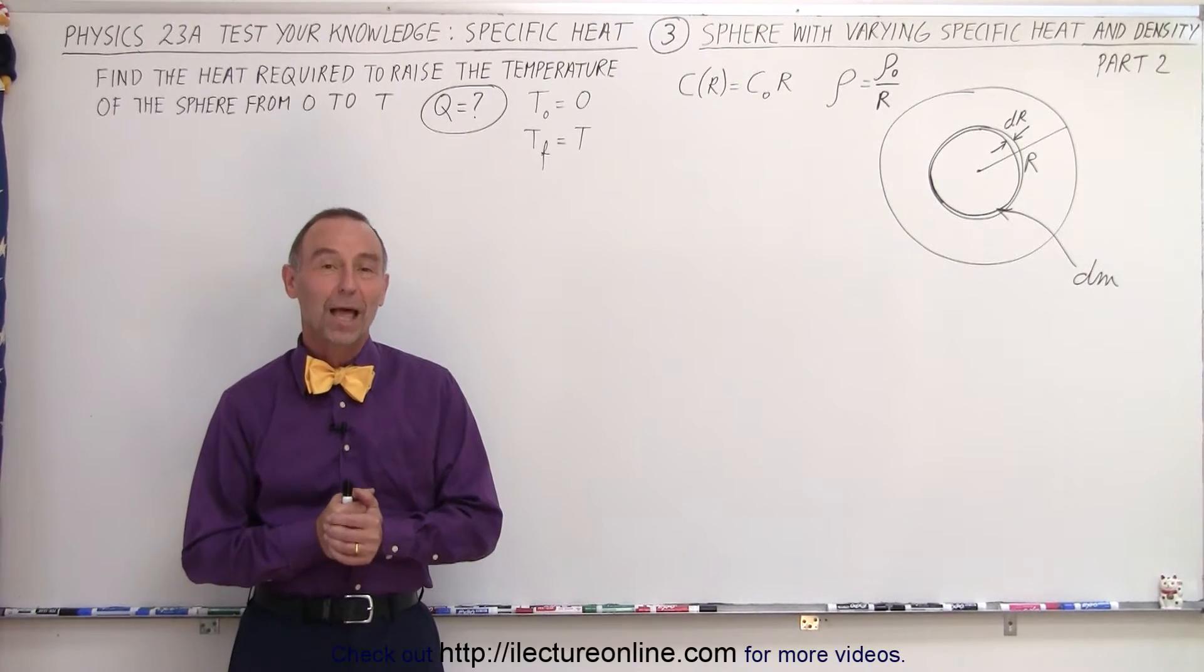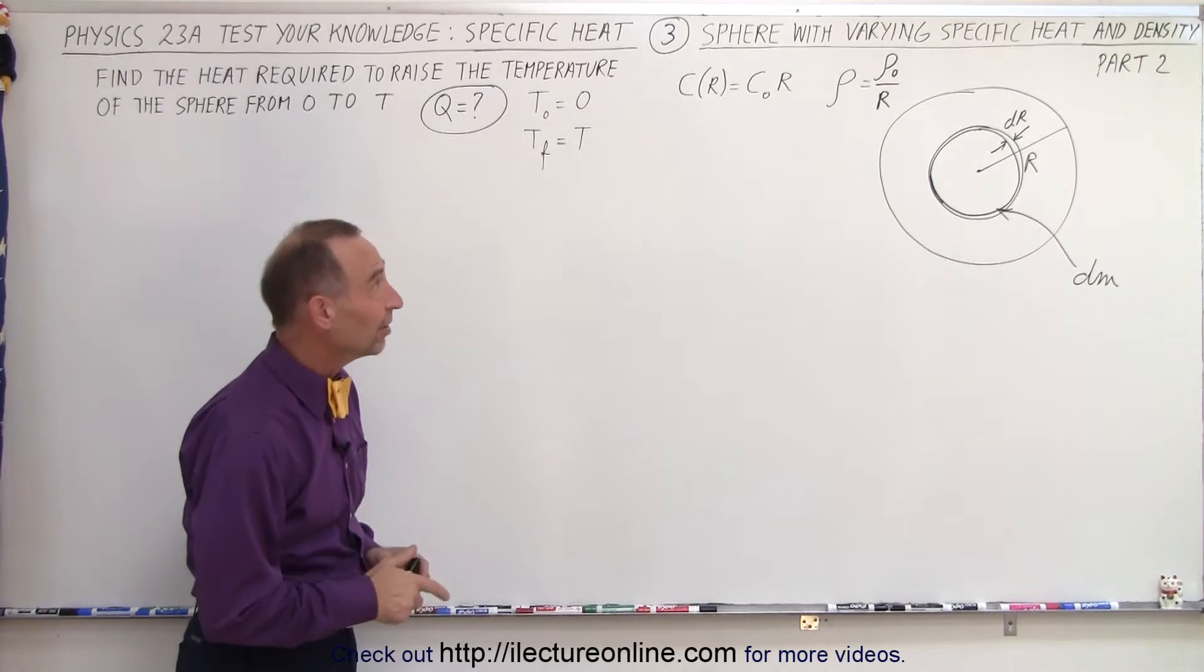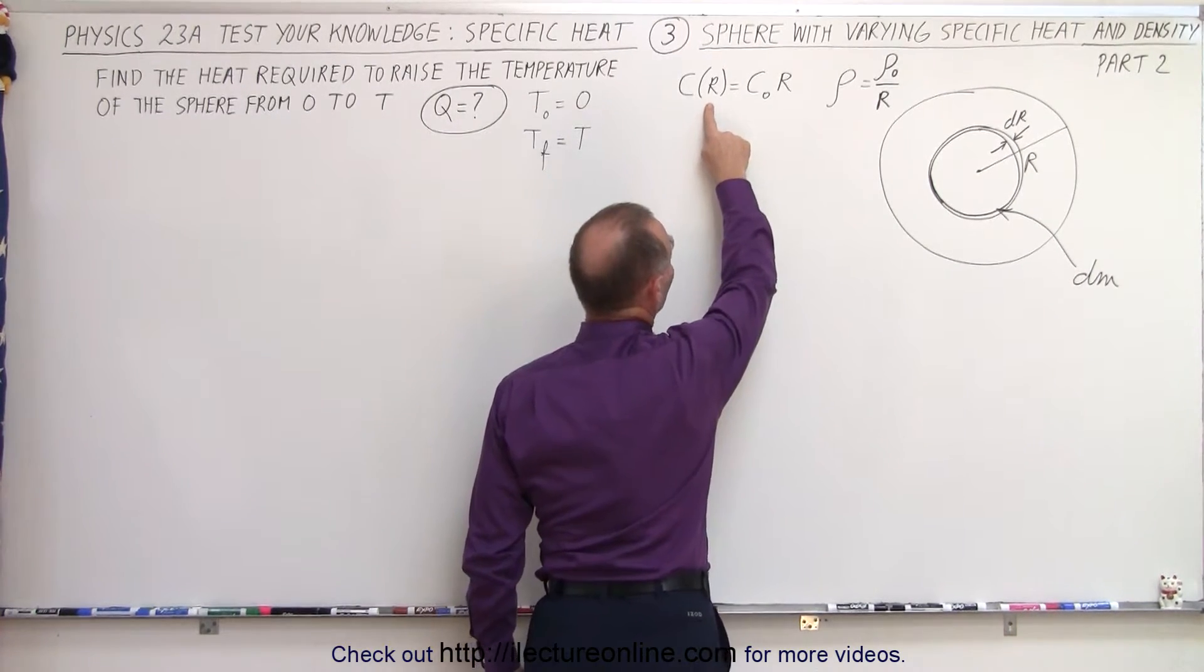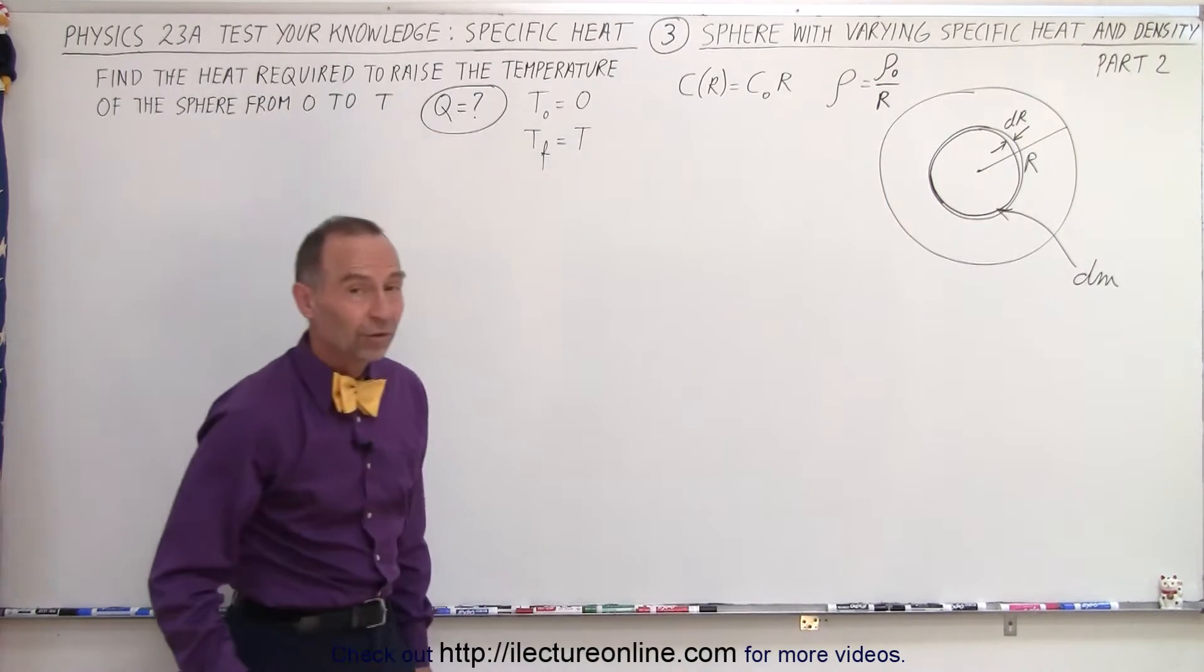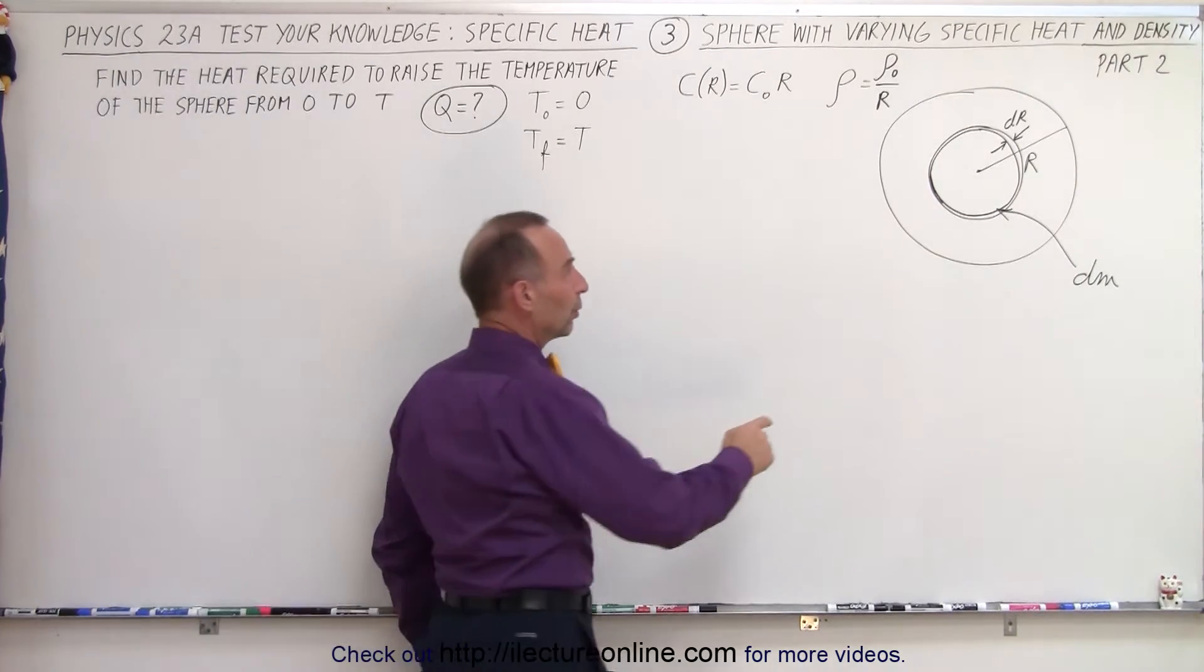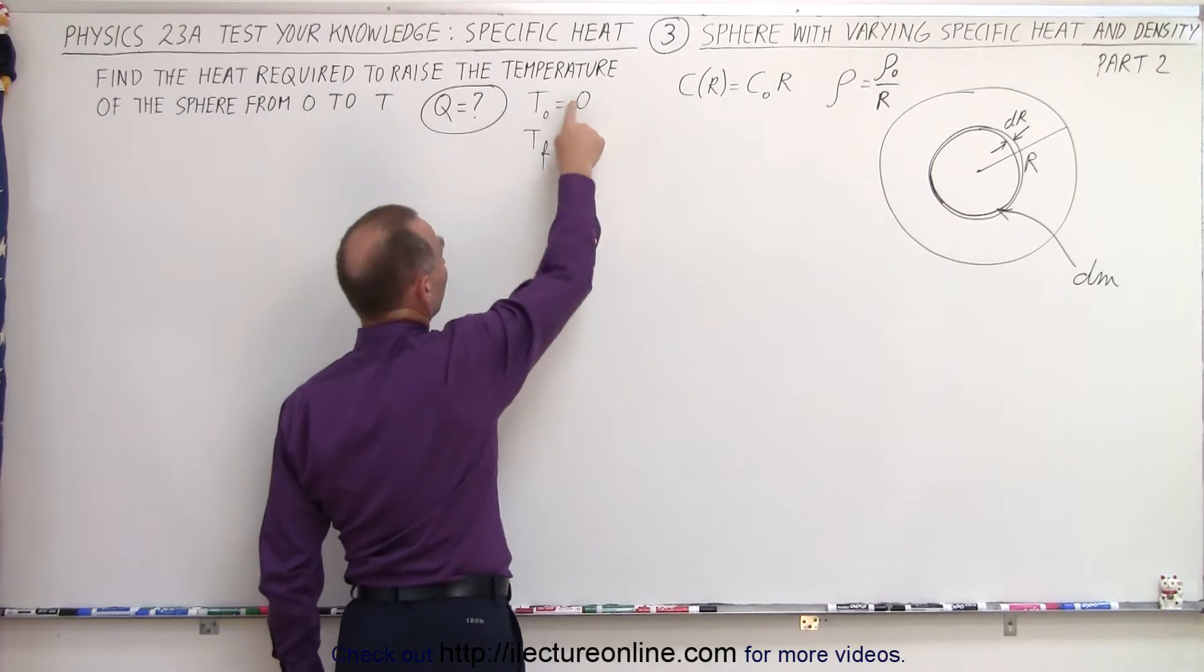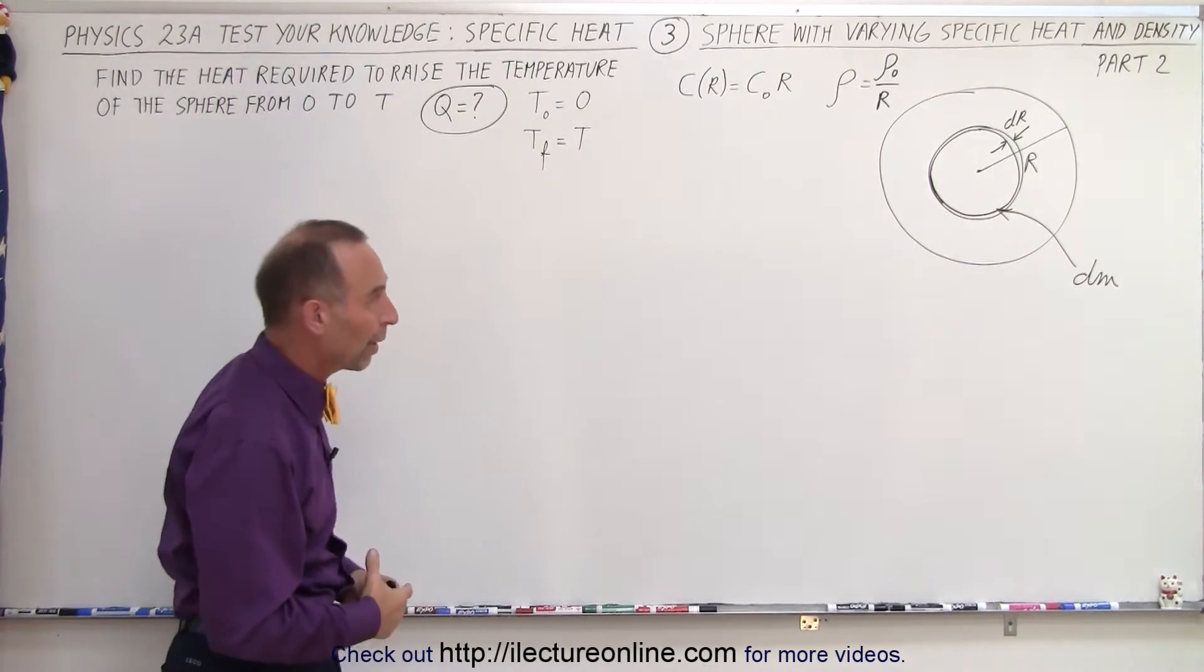Welcome to I Like to Run Line. Now in part two of the problem, we're also going to vary the density. Notice that the specific heat varies as the radius and the density varies as the inverse of the radius. So what is the total heat required to take a sphere with radius R and increase it from the initial temperature of zero to the final temperature of T? We're looking for the total heat required.